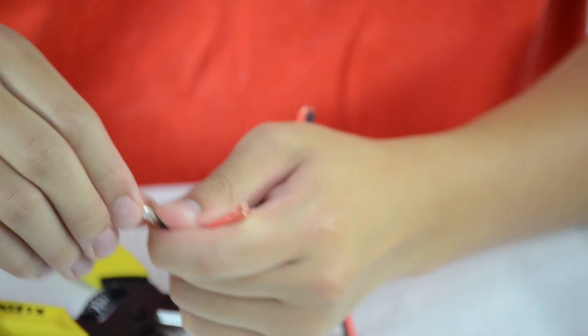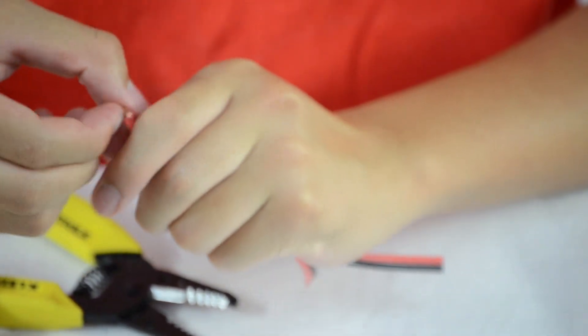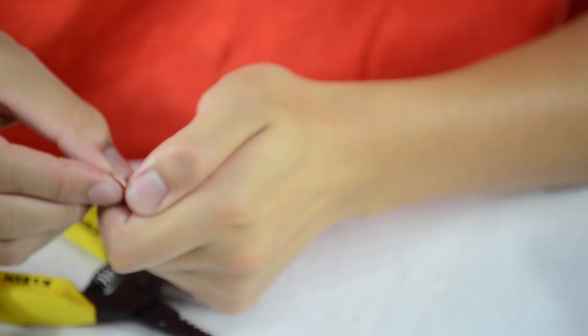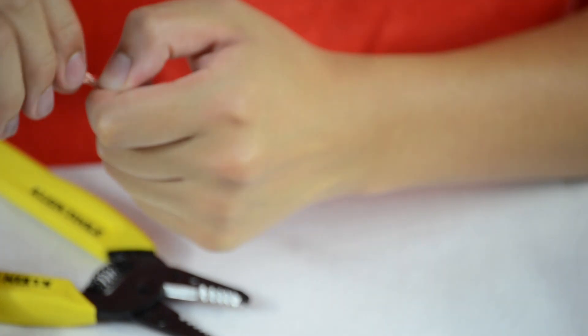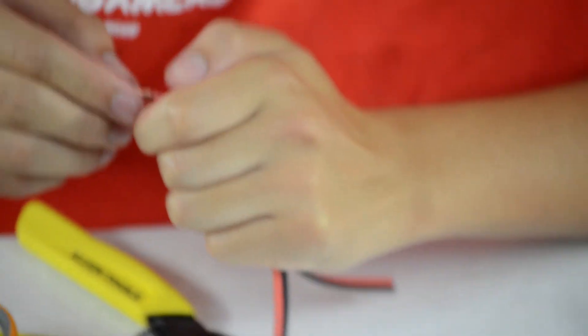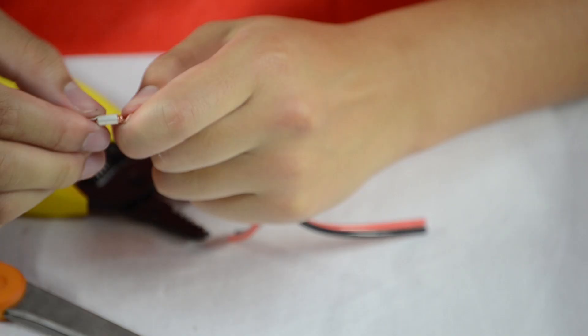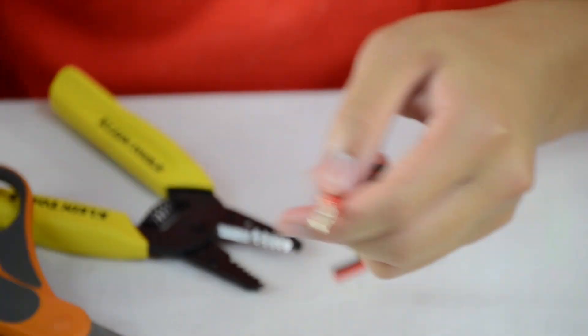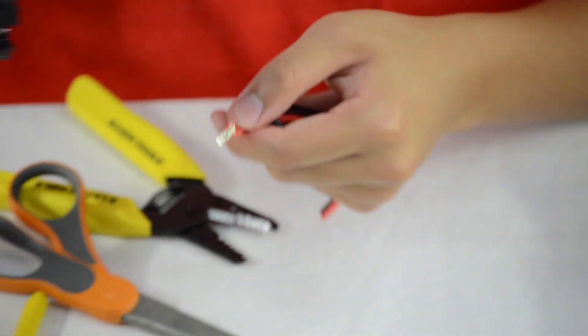So, now it's crimped and you want to do the same thing on this side. Take your 30 gauge metal tip and once you've put it on, you just want to simply crimp this one as well.